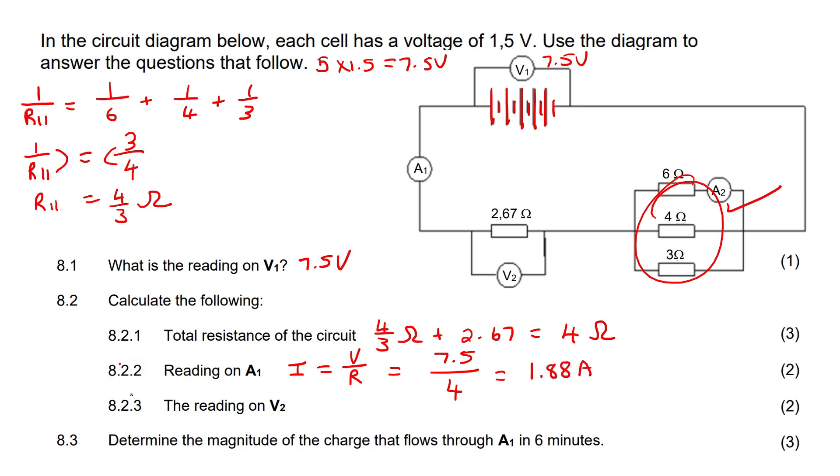And then this question says, what is the reading on V2? Now V2, be careful, V2 is only for this part. So we know that I equals V over R. If you had to get the V by itself, then you should end up with V equals I multiplied by R.